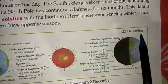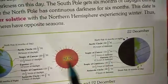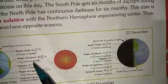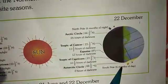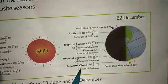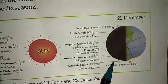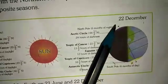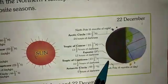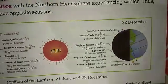On 22nd December, the Tropic of Capricorn (23.5° south) gets the direct rays of the sun. The southern hemisphere has summer with longer days and shorter nights. The south pole is tilted towards the sun, and places beyond the Antarctic Circle in the northern hemisphere have 24 hours of darkness. The south pole gets 6 months of daylight while the north pole has continuous darkness for 6 months. This date is known as winter solstice, with the northern hemisphere experiencing winter. Thus, the two hemispheres have opposite seasons.